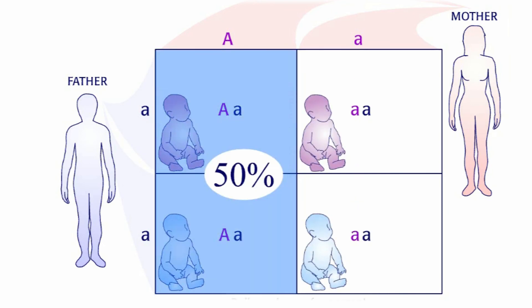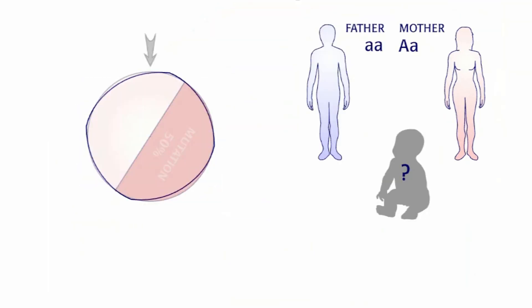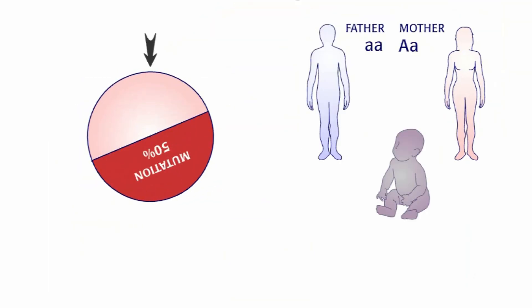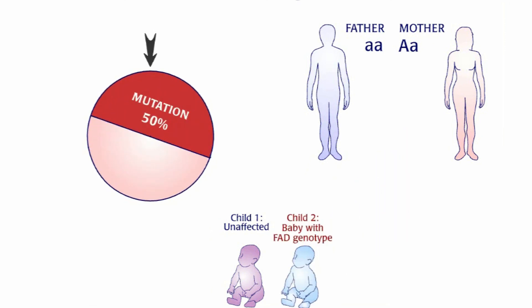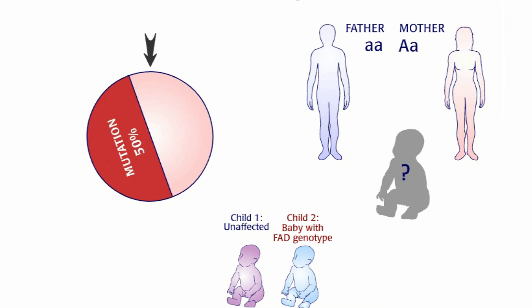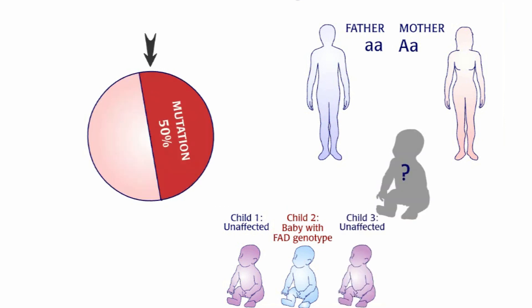It may be useful to think of the Punnett square as a roulette wheel. Each child is a separate spin of the wheel, so each child has a 50 percent chance of receiving the mutation. Other couples with Alzheimer's mutation may have 2, 3, 4, or even no children with FAD.